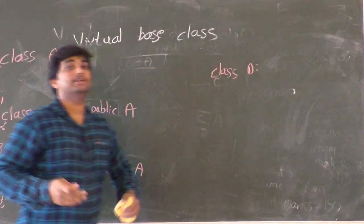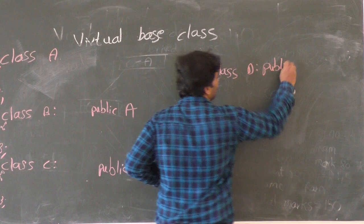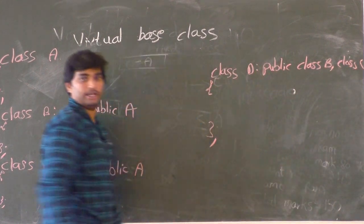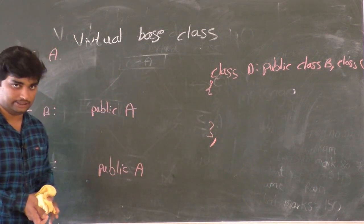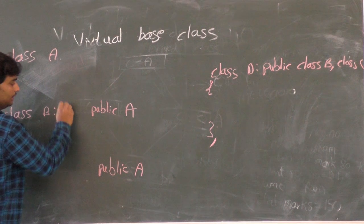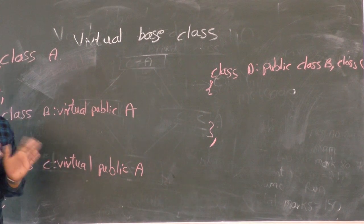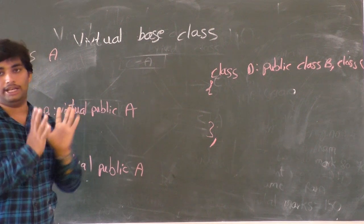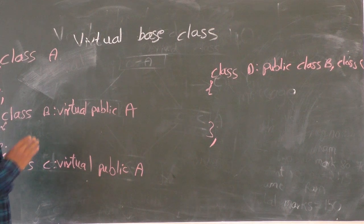Class D inherits from both public class B and public class C. Using public B and public C causes a confusion. To overcome this confusion, we use the keyword 'virtual' in the inheritance of class B and class C from class A. By using virtual, we will not get any ambiguity or error messages. That is the importance of the virtual keyword in virtual base class.